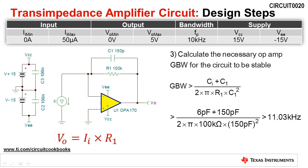The last step in this design is to verify that the gain bandwidth of the amplifier is sufficiently large to ensure stability. To do this, we must take into consideration the device's input capacitance, feedback capacitance, and feedback resistor. Note that the input capacitance Ci is the summation of the source's capacitance and the amplifier's differential and common mode input capacitances.